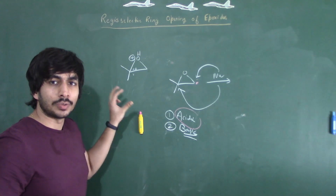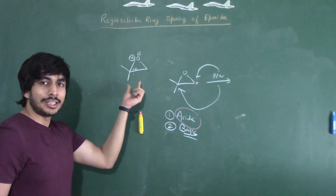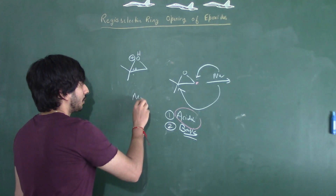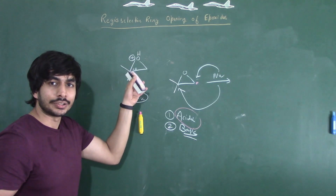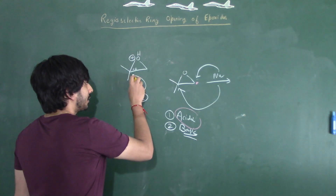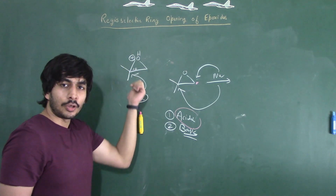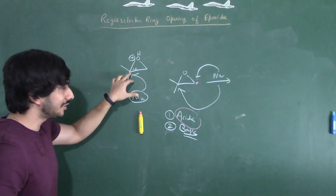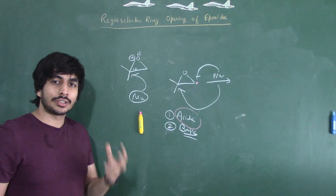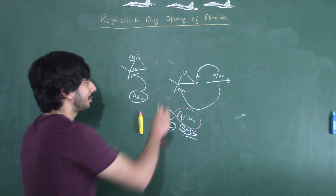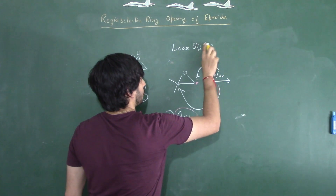There are two methyl groups which are stabilizing this positive charge, so there is a cationic intermediate or transition state that is formed. Once this cationic intermediate is generated, the positive charge on this particular carbon will be more stabilized due to the inductive effect of the methyl substituents. So because this transition state is getting stabilized, the nucleophile will attack the more electrophilic center — the more hindered site. This is also sometimes referred to as the loose SN2 transition state.